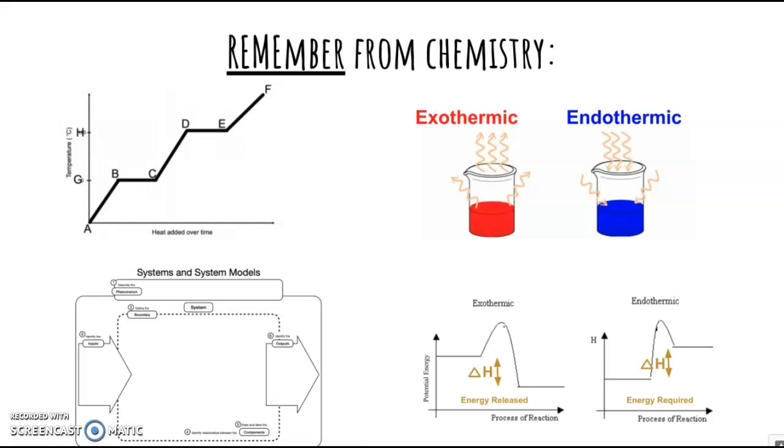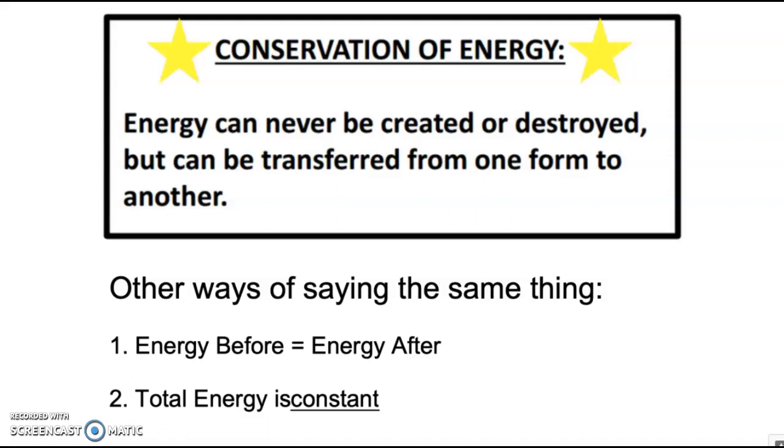Today's lesson really shouldn't be too much of a surprise. The conservation of energy states that energy can never be created or destroyed, but it can be transferred from one form to another. Another way of saying conservation of energy is the energy before something happens needs to equal the energy after that something happens. A final way of saying this is that the total energy stays constant.